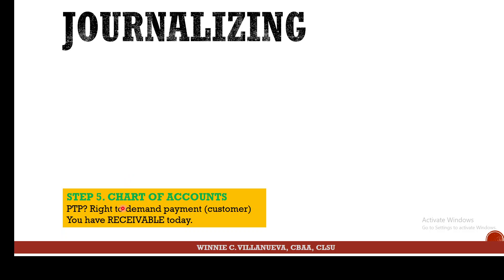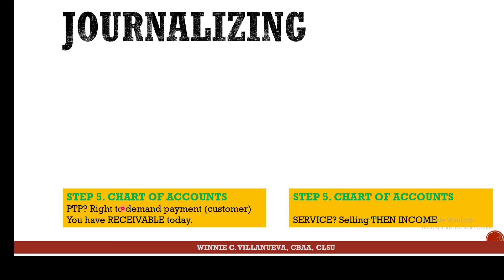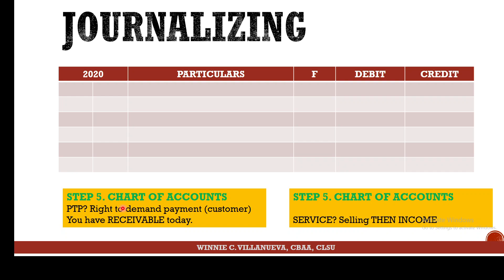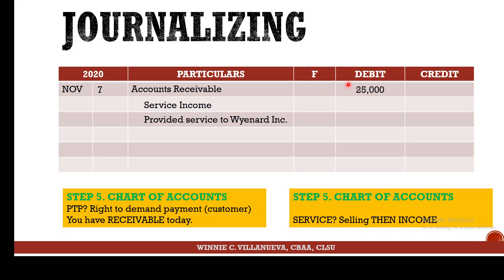For the journal entry, date is still November 7. The value received — the promise to pay — gives you the right to demand payment, so it's Accounts Receivable (debited). The credit is Service Income — the service parted with. Amount: 25,000. It was provided to Winard Incorporated. The brief explanation tells the who and the what — and even the why.